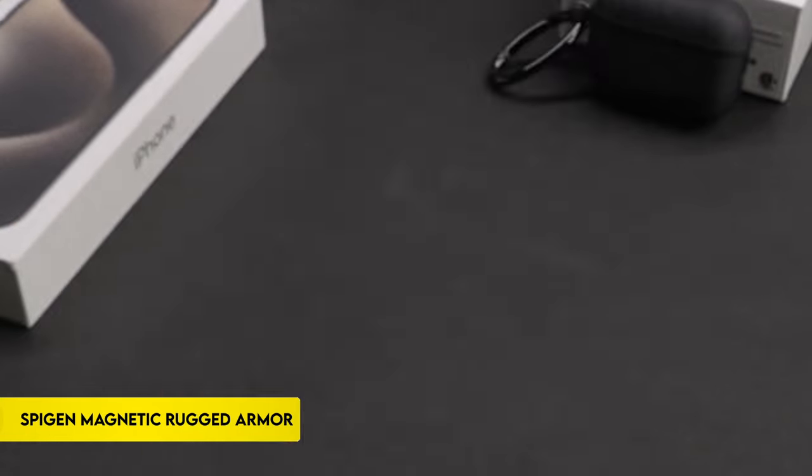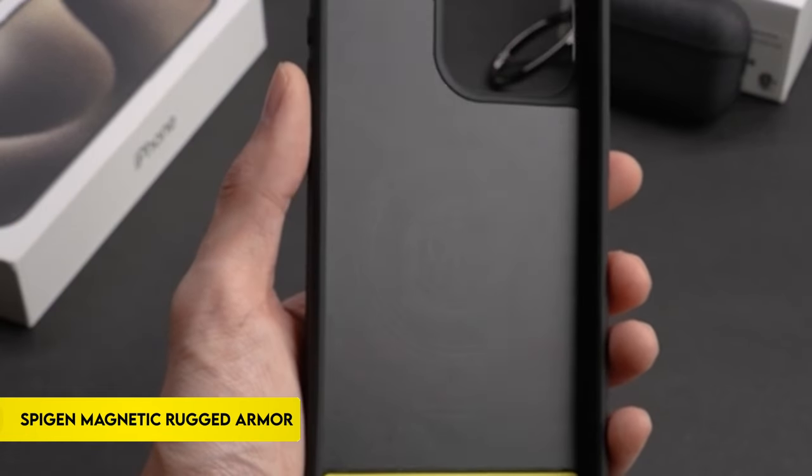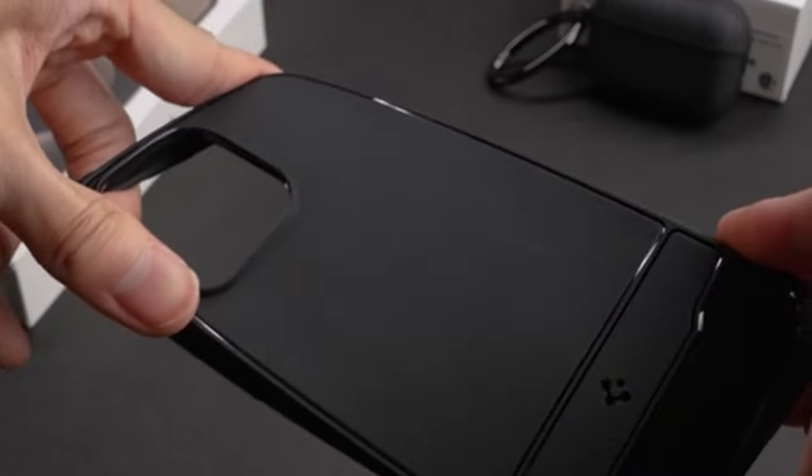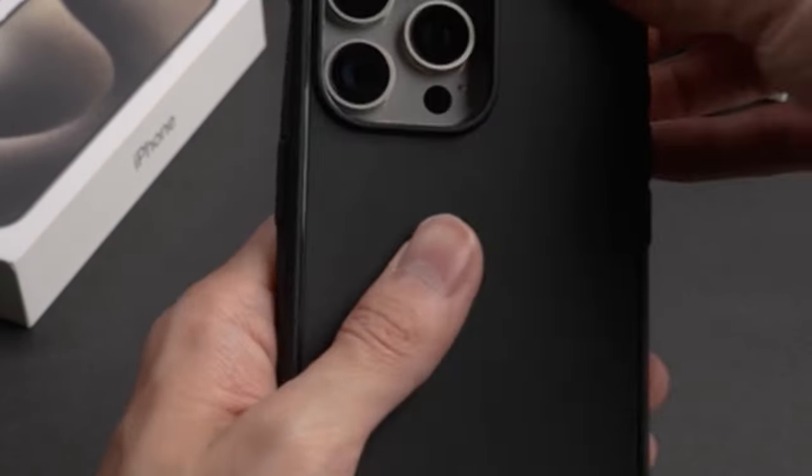On number 5, Spigen Magnetic Rugged Armor. The iPhone 15 Pro 2023 case has a fashionable carbon fiber pattern,